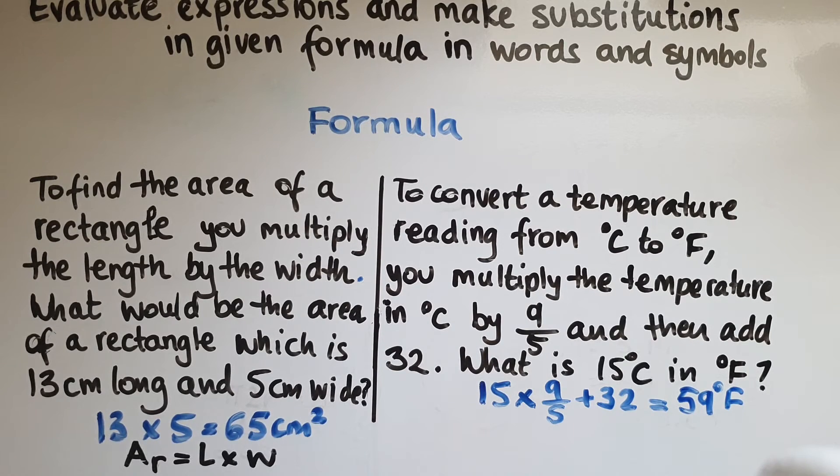So to write this in symbols, that's what we're looking to work out: degrees Fahrenheit is equal to temperature in degrees Celsius times 9 over 5 plus 32.